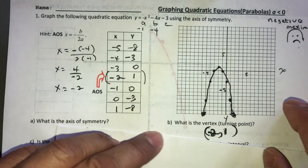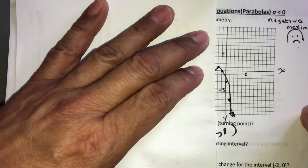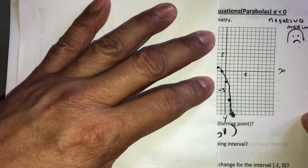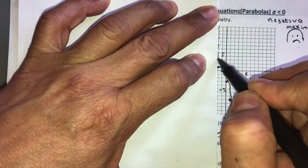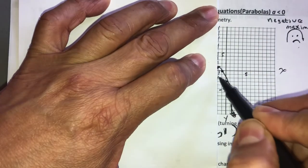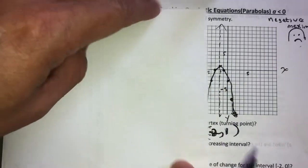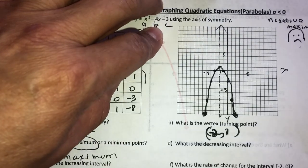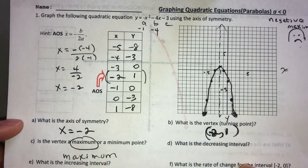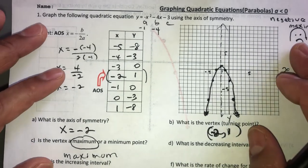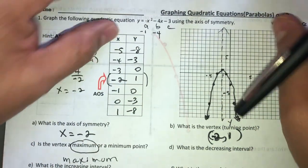On your homework, draw the plane using a ruler. I also like to draw the axis of symmetry to show that it cuts the parabola in half. Now that the parabola is complete, I'll answer the remaining questions from parts E and F.